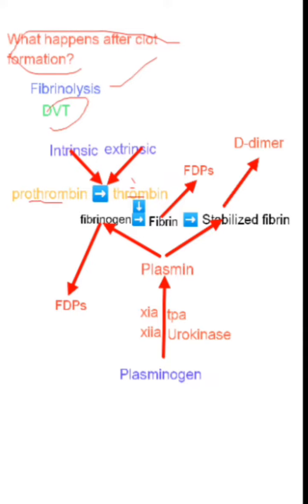After thrombin formation, it facilitates the conversion of fibrinogen into fibrin. I want you to understand clearly that fibrinogen is converted into fibrin through the action of thrombin, and then fibrin is converted into stabilized fibrin.